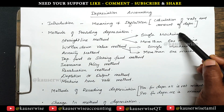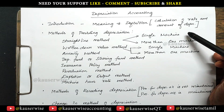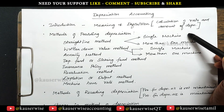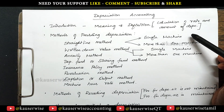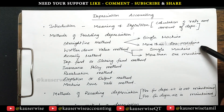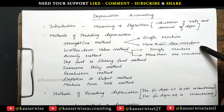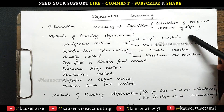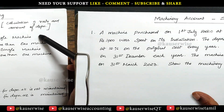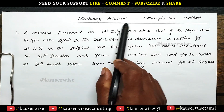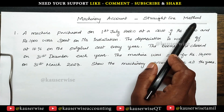Here we have two different models. The first one: how to prepare the machinery account with a single machine, and the second one: more than one machine. Now let's see the numerical problem for the first one — machinery account, straight line method.